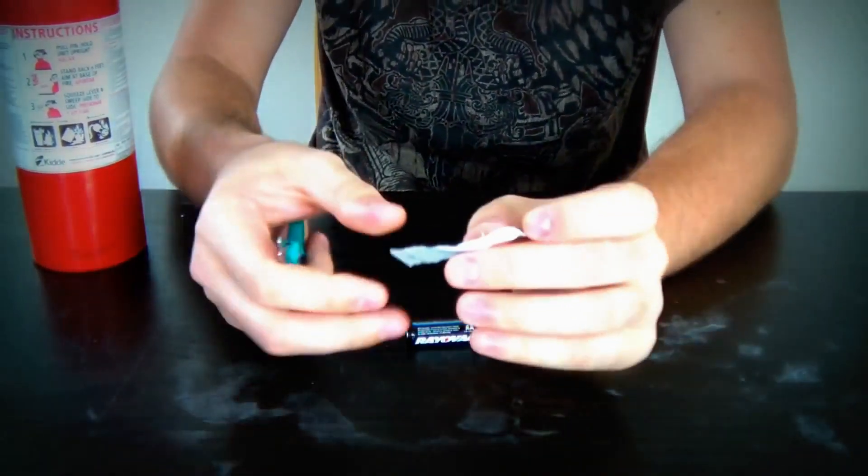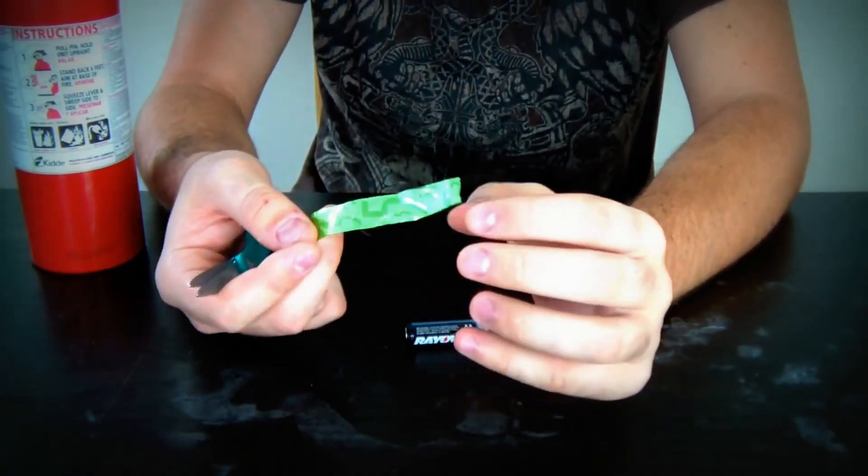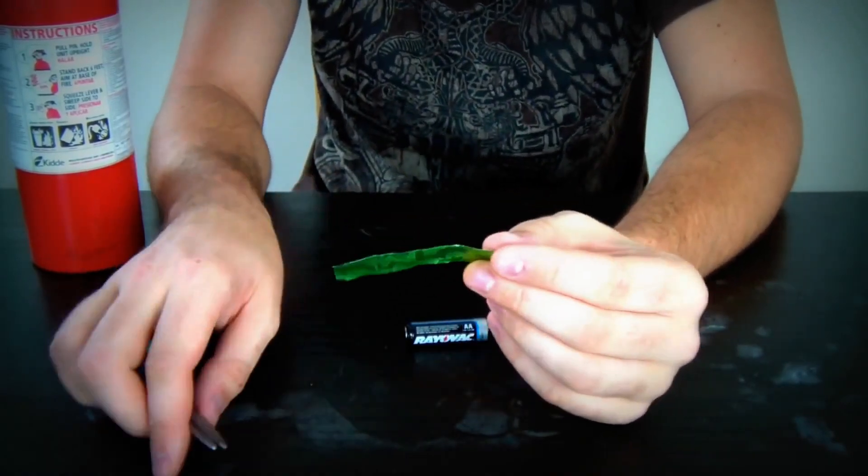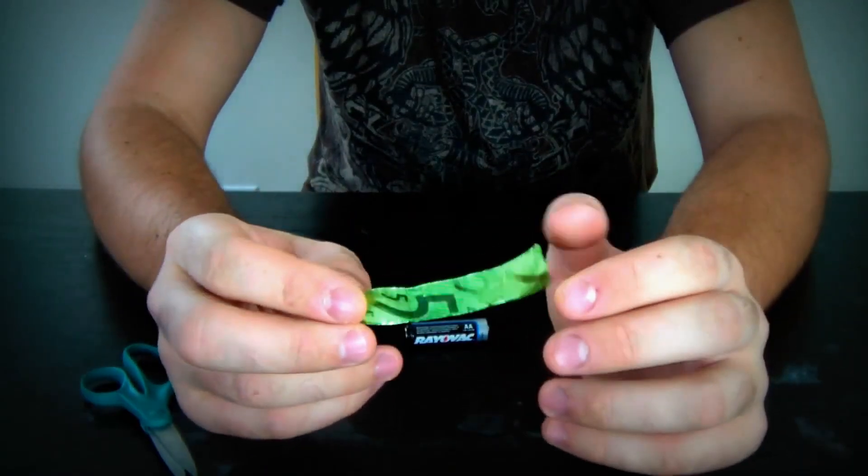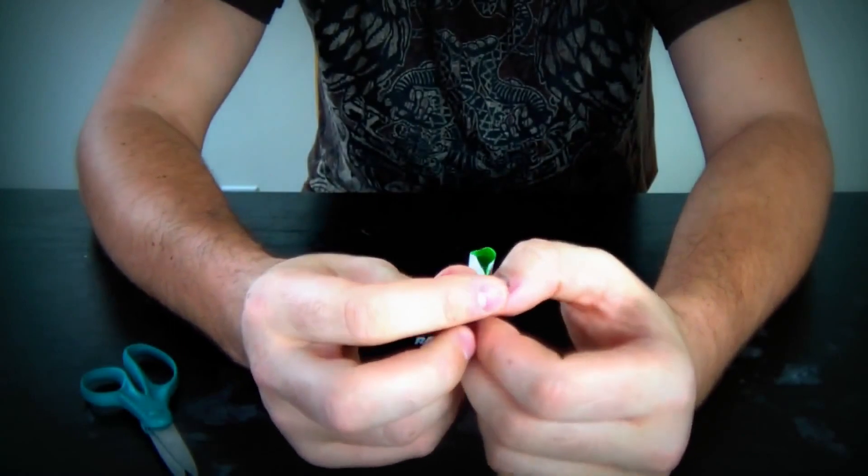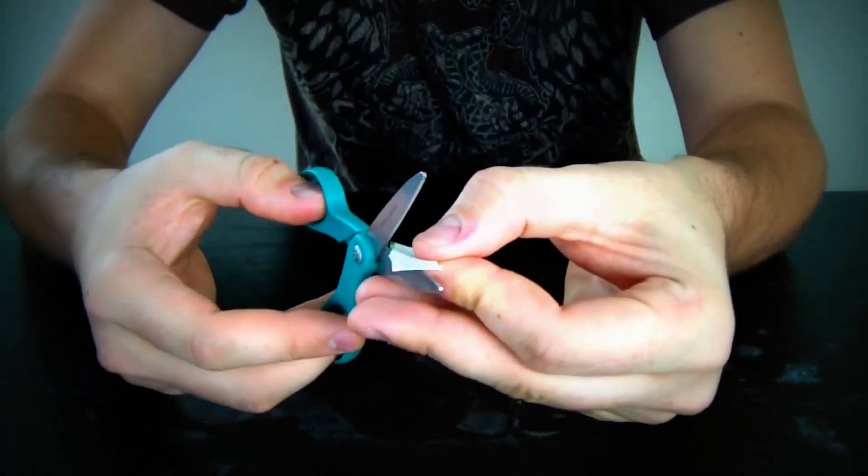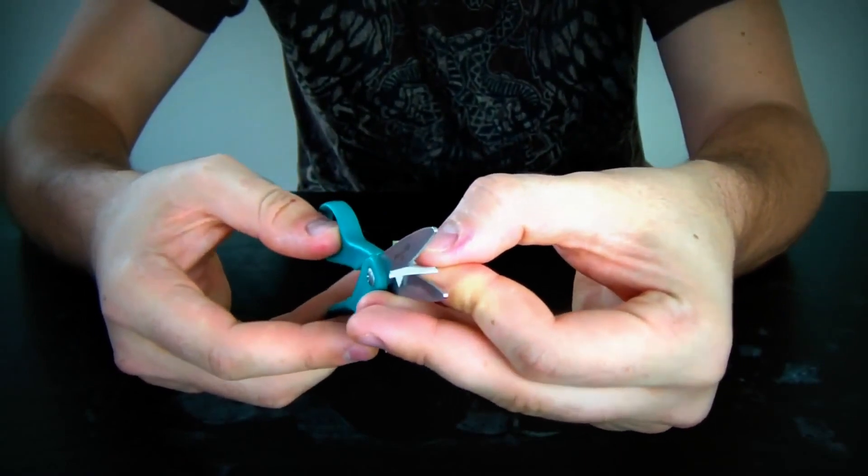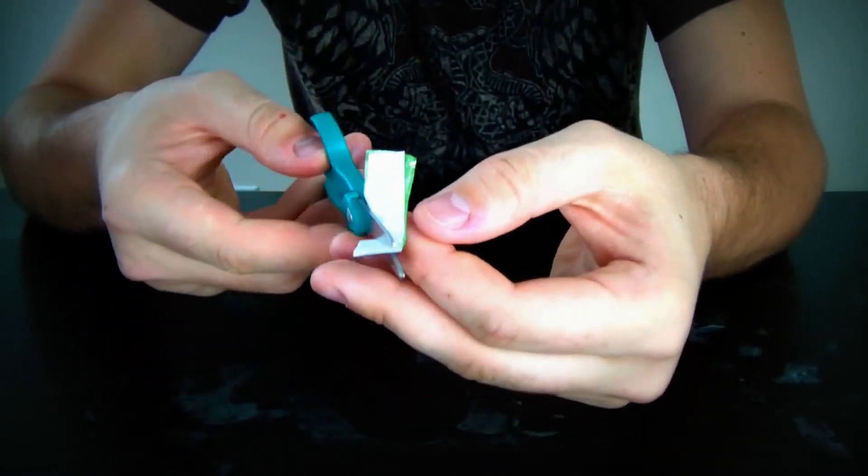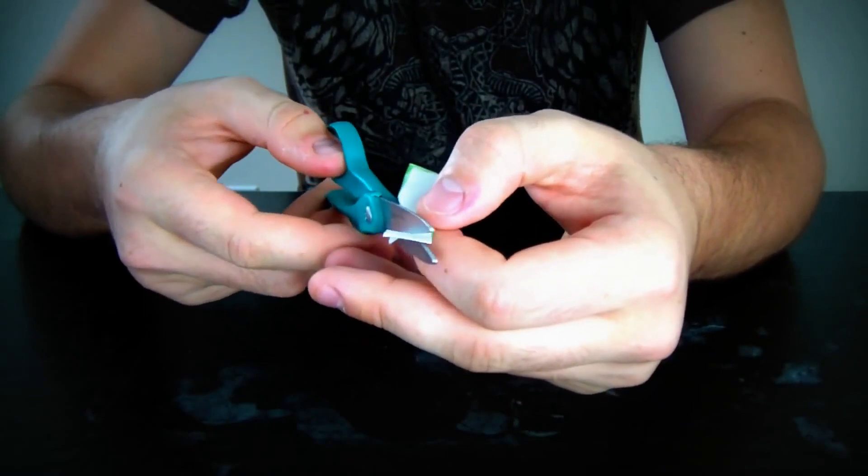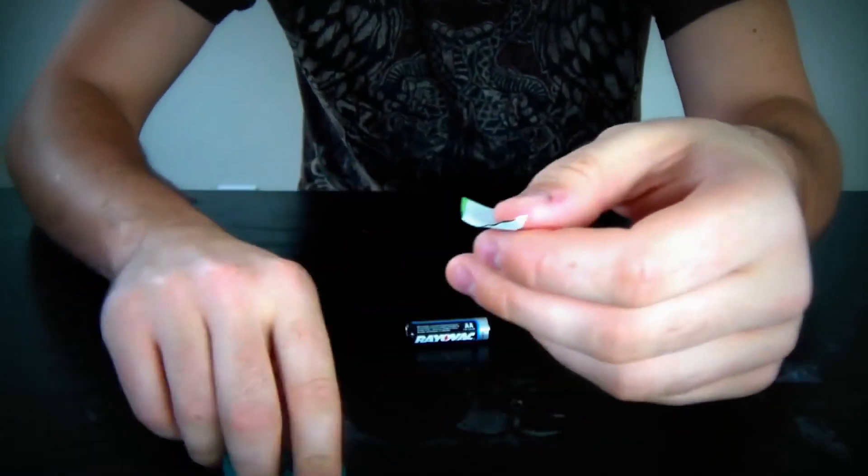You want to fold it in half like this, then grab your scissors and cut it from this side to the top. You see how I leave it a little bit, not too little, but so it looks like that.